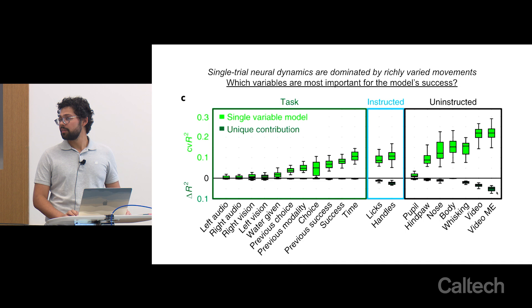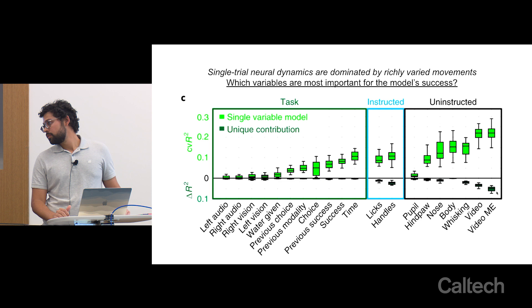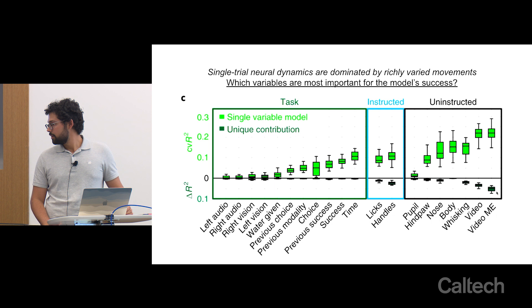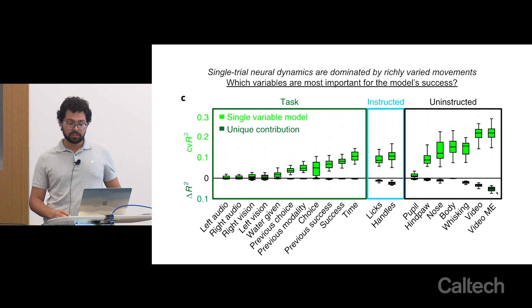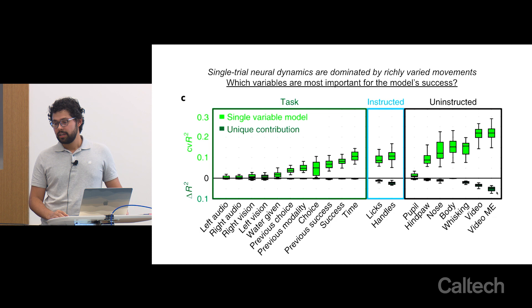When looking at ΔR², task-related regressors like time had the highest CVR² value, but when removed and the model refitted, the ΔR² is near zero — meaning even though time explained variance alone, the full model performs virtually the same without it. But the same can't be said for movement-related variables, especially uninstructed movements like whisking or motion energy. A related concern is spurious correlations in systems neuroscience — we made sure in a recent preprint that findings weren't related to autocorrelation values.